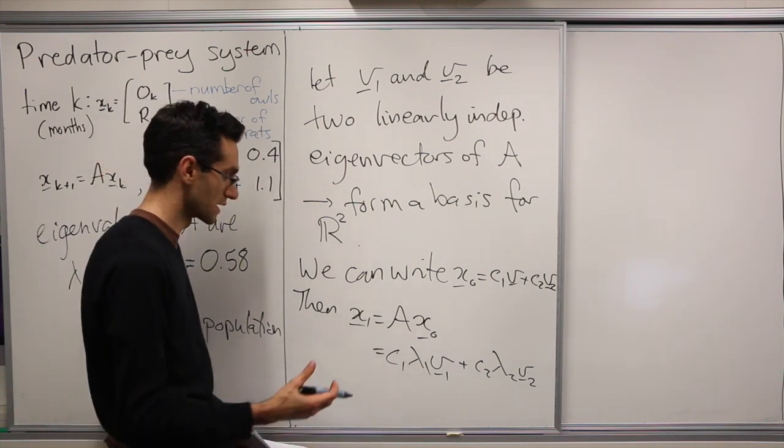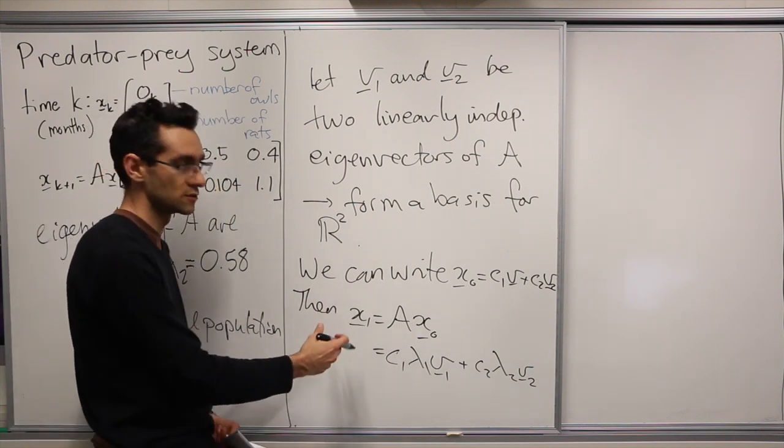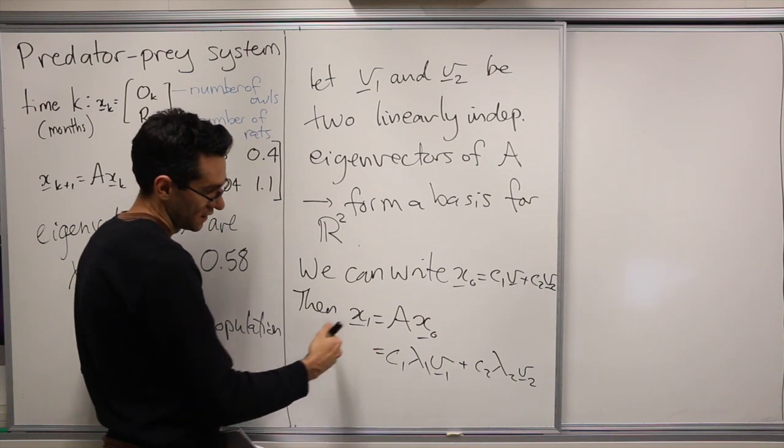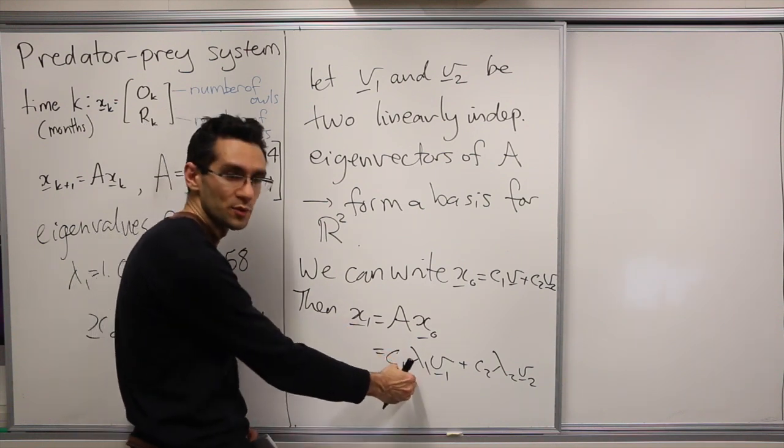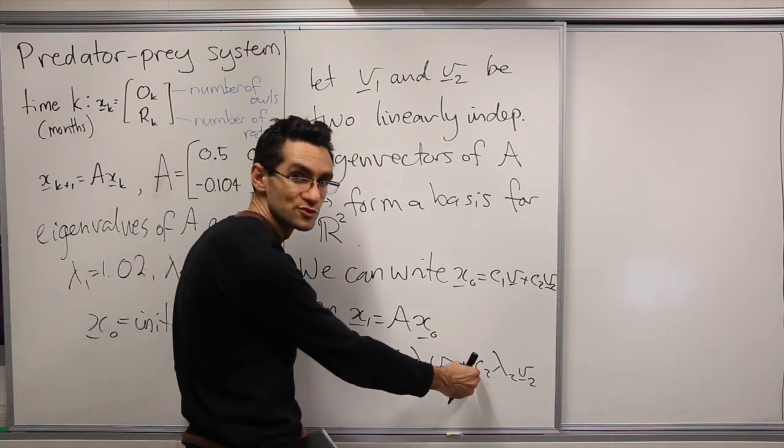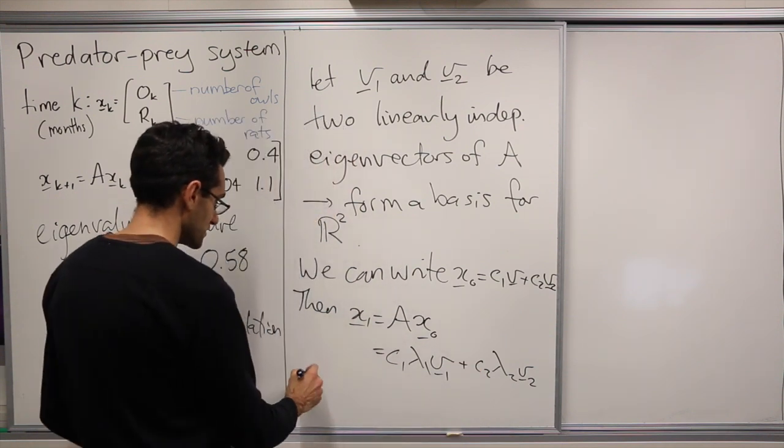And we continue again in this way. We look at x2, which is A times x1, and then we get c1·lambda1²·v1 + c2·lambda2²·v2.